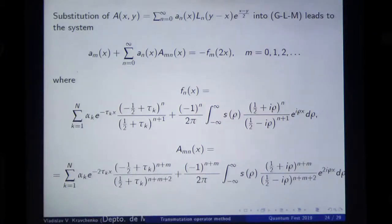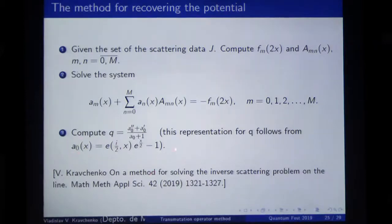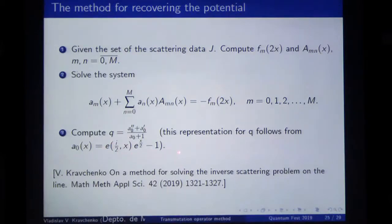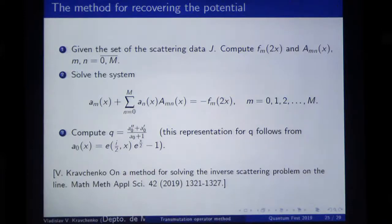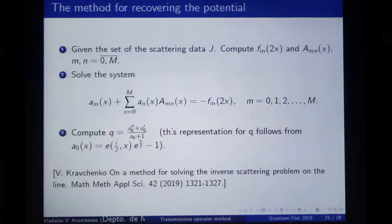Why do I only need A_0? Because I know this representation for A_0 — if I express from here the Jost solution, and if I know a solution of my Schrödinger equation, it means I know the potential Q. Q can be expressed from A_0 just as written here. So from the whole system, I just need the very first coefficient A_0. What should be done is: compute some first F_m and some first A_{mn}, solve this truncated system, find just A_0, compute Q from A_0, and see what happens.